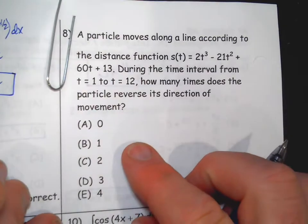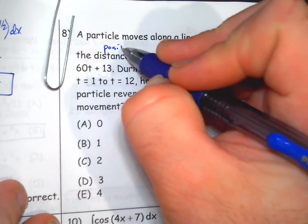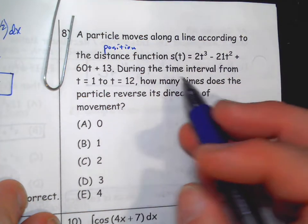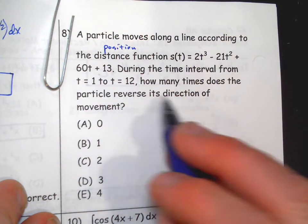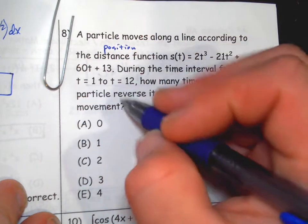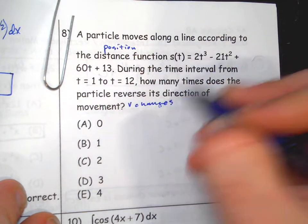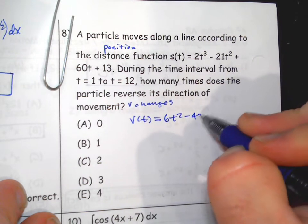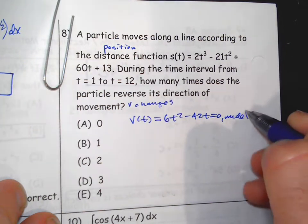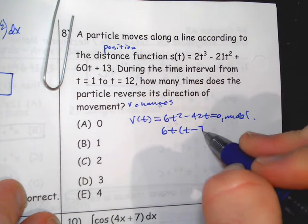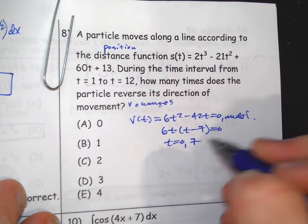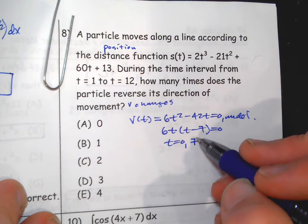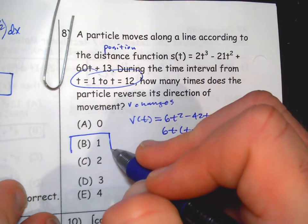Okay, number 8. Particle moving along line, distance function is really more like position function. Unless it's moving in the same direction all the time, which is a possibility, but I don't think it actually is. During time we're at 1 to 12, how often has particle reversed direction of movement. So that means V changes signs, right? So I think that, I mean, I don't think we need to do a line check, but the velocity is 6t squared minus 42t equals 0 undefined. And then we factor a 6t out, t minus 7. So t equals 0 and 7 are places where it changes direction.